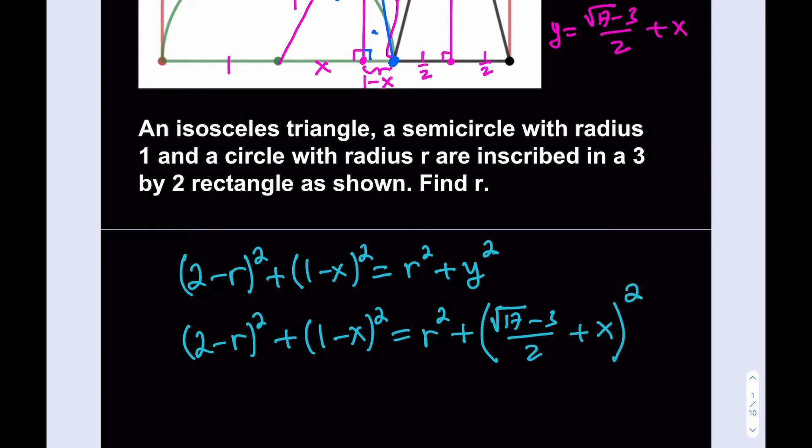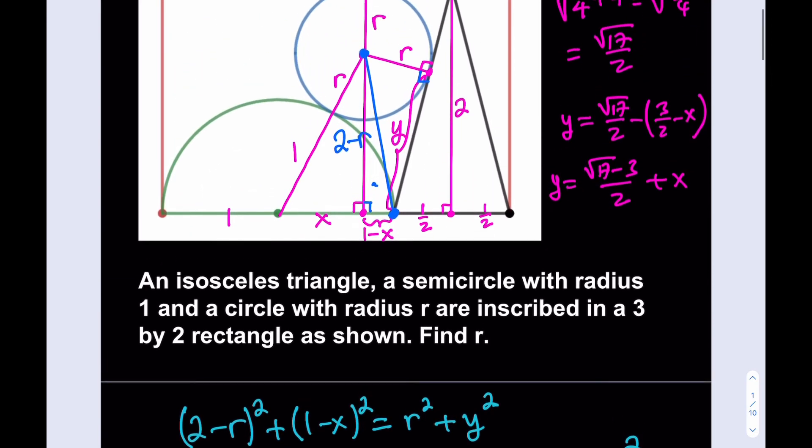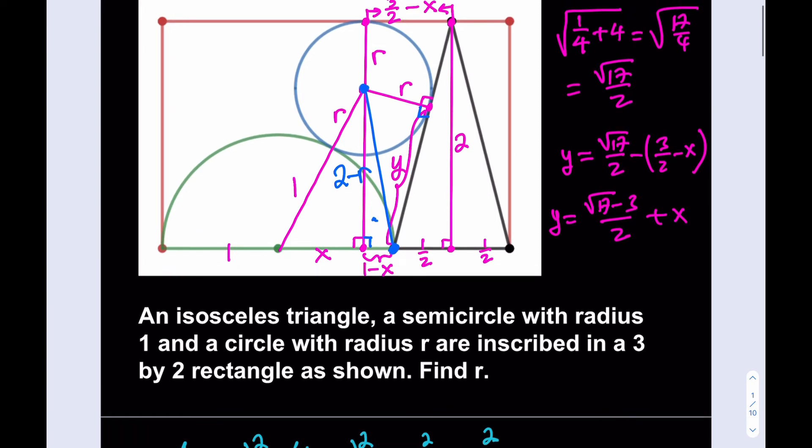Let's go ahead and write down our equation. So, what I'm trying to say is the hypotenuse 2 minus r squared plus 1 minus x squared, which is hypotenuse squared, is equal to r squared plus y squared. Beautiful. But I know the value of y, so let me go ahead and substitute that. So, this gives me 2 minus r squared plus 1 minus x quantity squared equals r squared plus y squared, which can be written as square root of 17 minus 3 over 2 plus x squared.